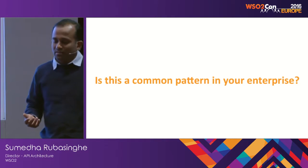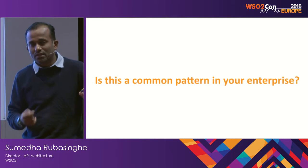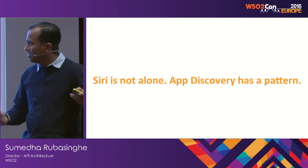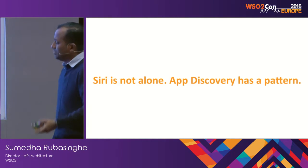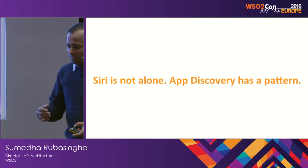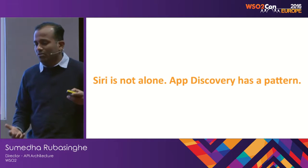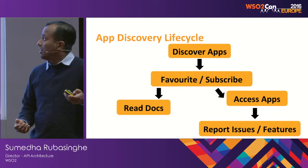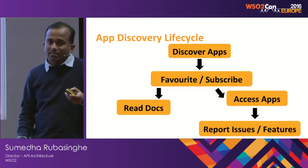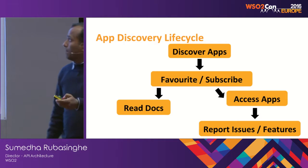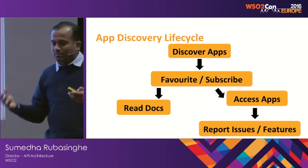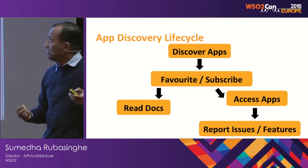I read that IBM has somewhere close to 30,000 applications used internally. It is a common problem in different enterprises which is not solved at a central level. So app discovery — the particular problem that Siri faced — is actually having a pattern.